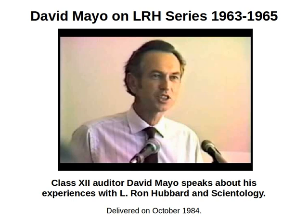After R212, there were several other procedures that quickly changed from 212 back to goals and line plots — some called actual goals and GPMs, others called implant goals and GPMs, and something called the helotrobus implants. Every org in the world received a cable from LRH saying to instantly and immediately stop running whatever you're running and start running the helotrobus line plots as soon as the line plots arrive in the mail. It started off with the goal to forget, which was implanted in a place called heaven.